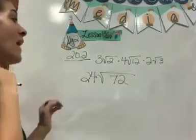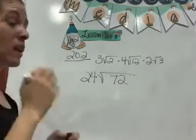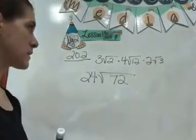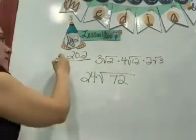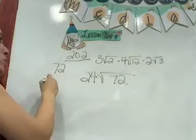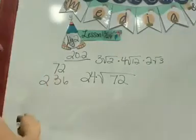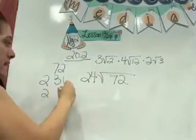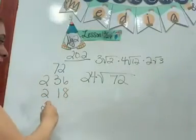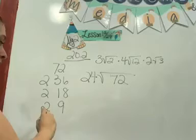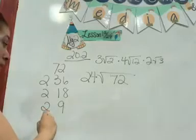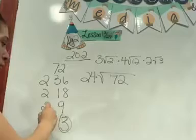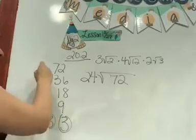Now we have to simplify it, and we're going to do it both ways in case you guys have different preferences. 72 divided by 2 is going to give you 36. 36 divided by 2 is going to give you 18. 18 divided by 2 is going to give you 9. 9 divided by 3, because it can't be 2, is going to give you 3, and that means you're left with 3 times 3 times 2 times 2 times 2.